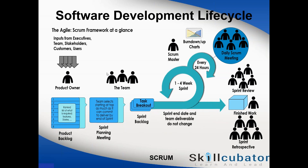In the Scrum framework there are only three roles defined: the Product Owner, the team, and the Scrum Master. The Product Owner is similar to a customer who has requested you to build a solution. The Product Owner comes from the business side and is responsible for giving the team direction on what has to be built — providing the requirements.